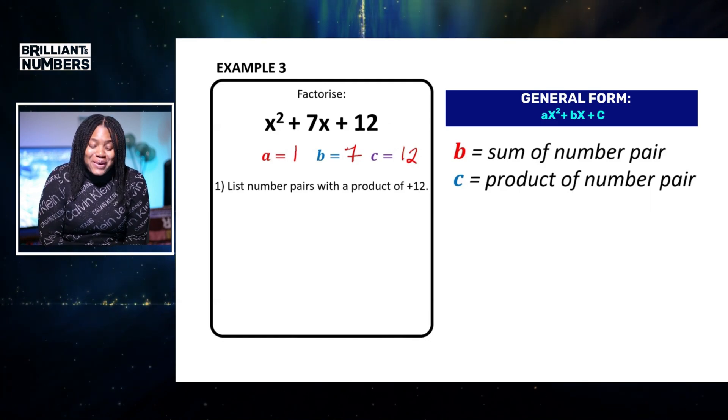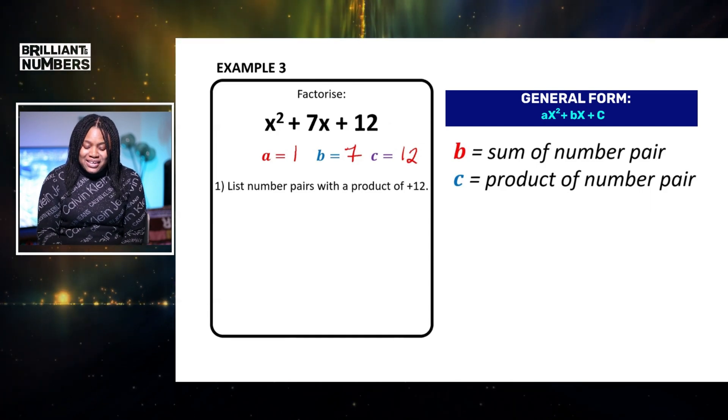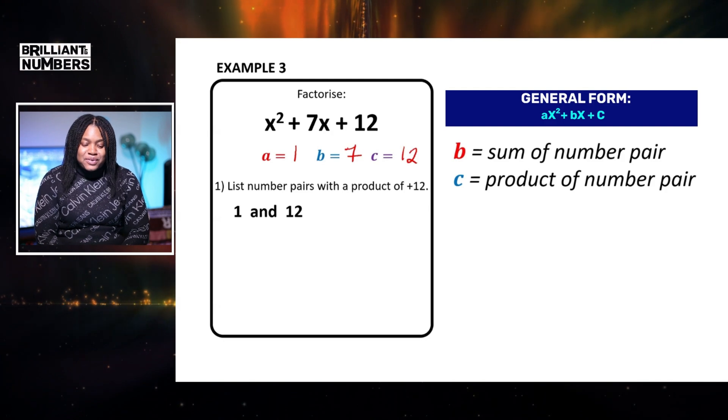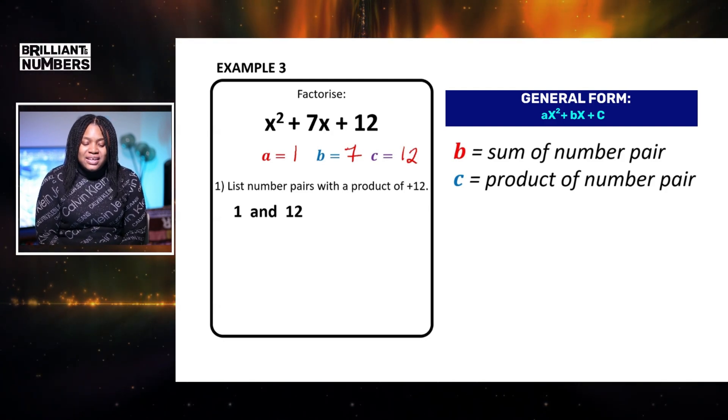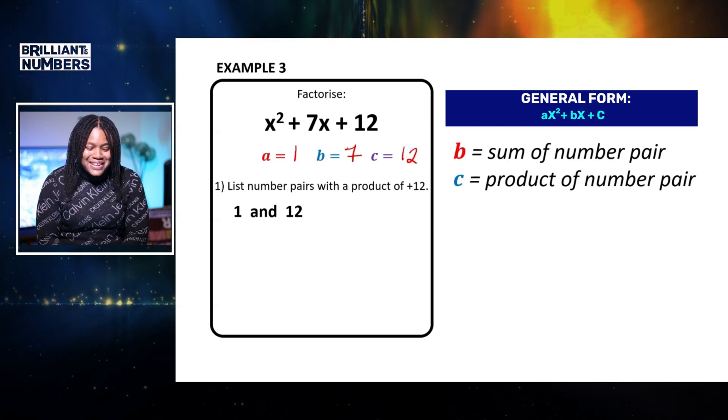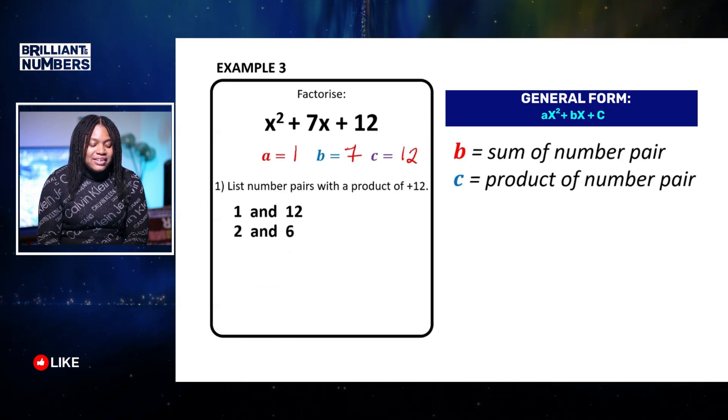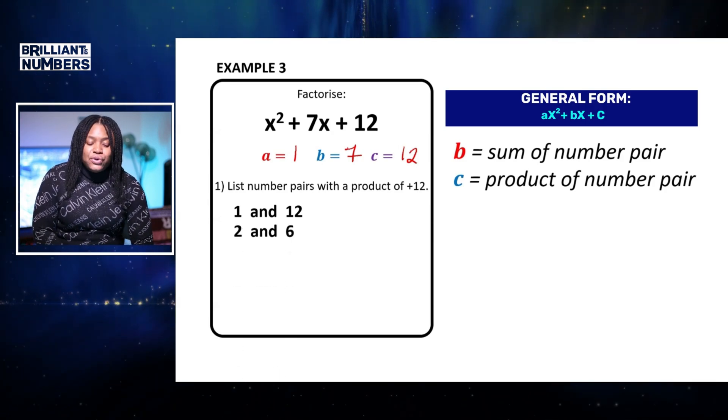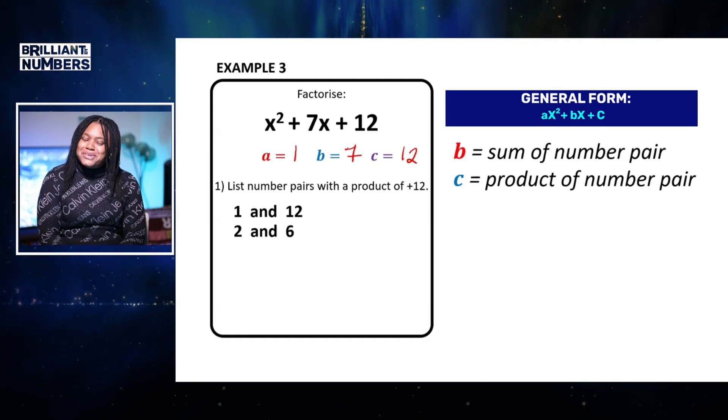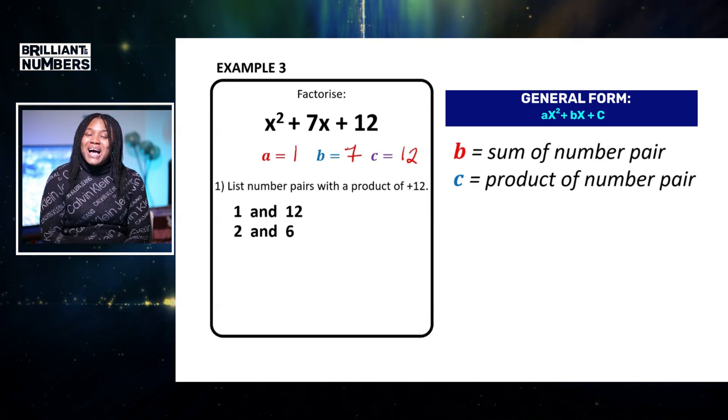Yes, you felt right. This one is also going to have more than one factor pair. So let's go. The first one is 1 and 12. 1 times 12 is equal to 12. But does that add to 7? Absolutely not. So we need to go again for another number pair. So we could also have 2 and 6. 2 times 6 is equal to 12. But do they add to 7? No. So we need to go again.